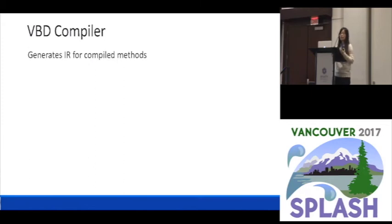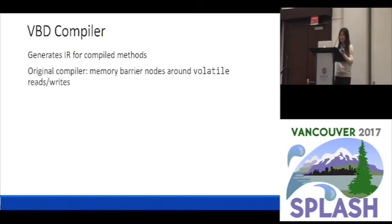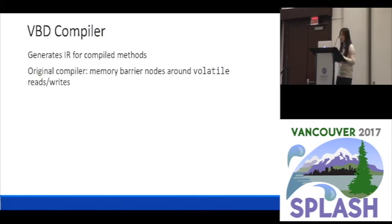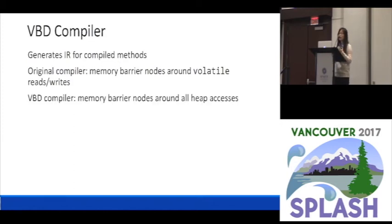Talking about the compilers: the compiler will generate an intermediate representation (IR) for the methods when compiling them, and then can do some optimizations and generate machine code. The key idea is that volatile semantics is preserved by the compiler by inserting memory barrier nodes around every volatile read and write in the higher-level IR. So what we have to do is make sure that there are memory barrier nodes in the higher-level IR for all heap accesses. If you are interested in the details, you can refer to our paper.